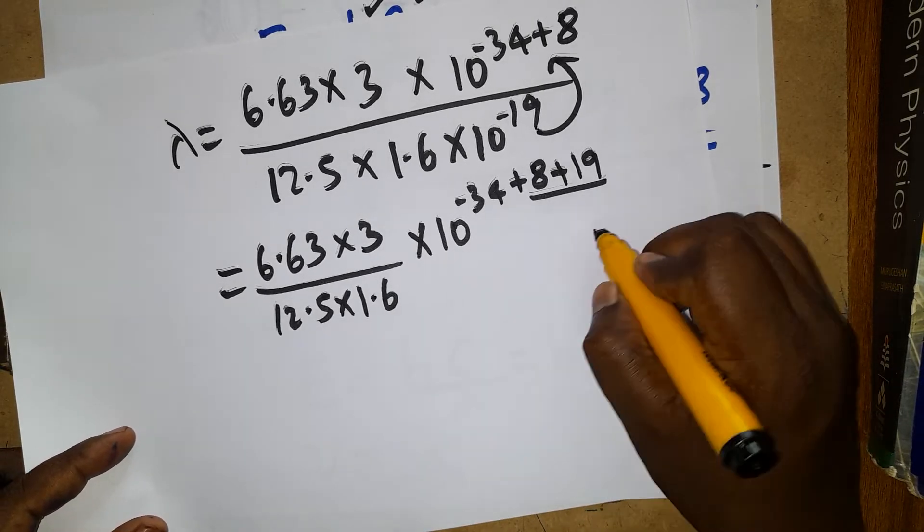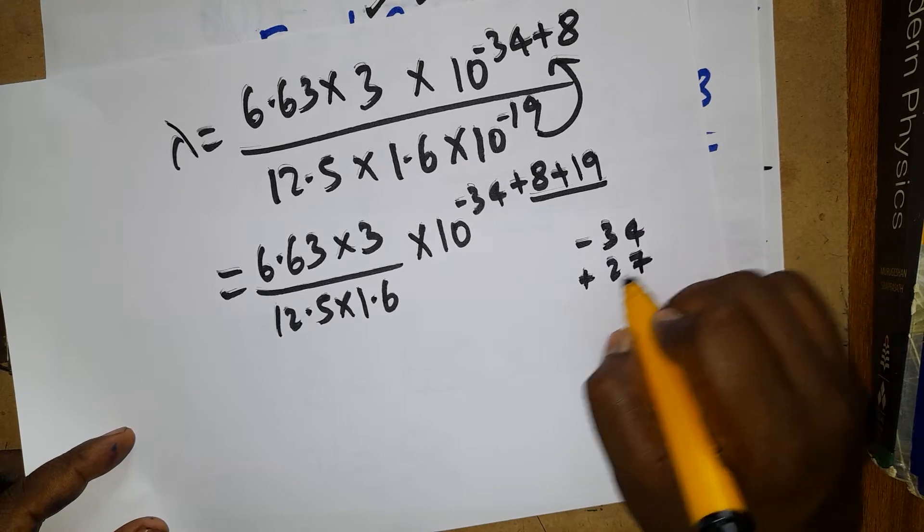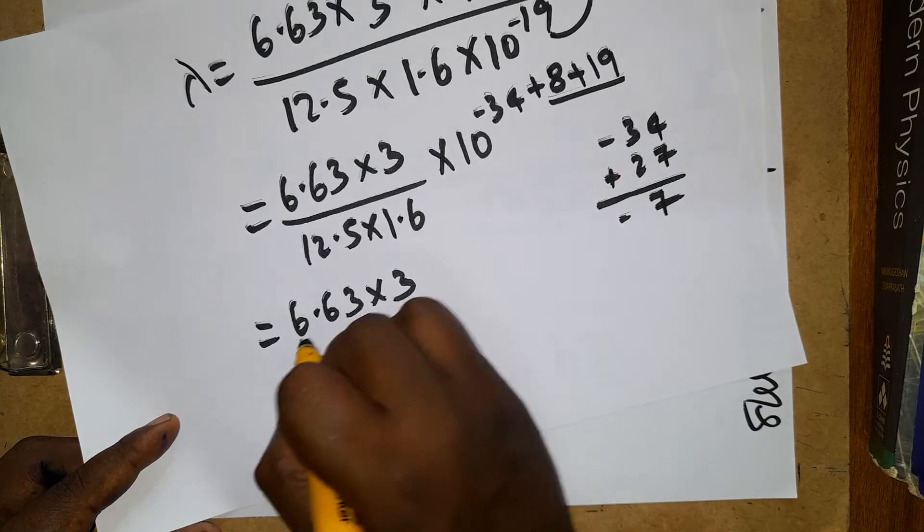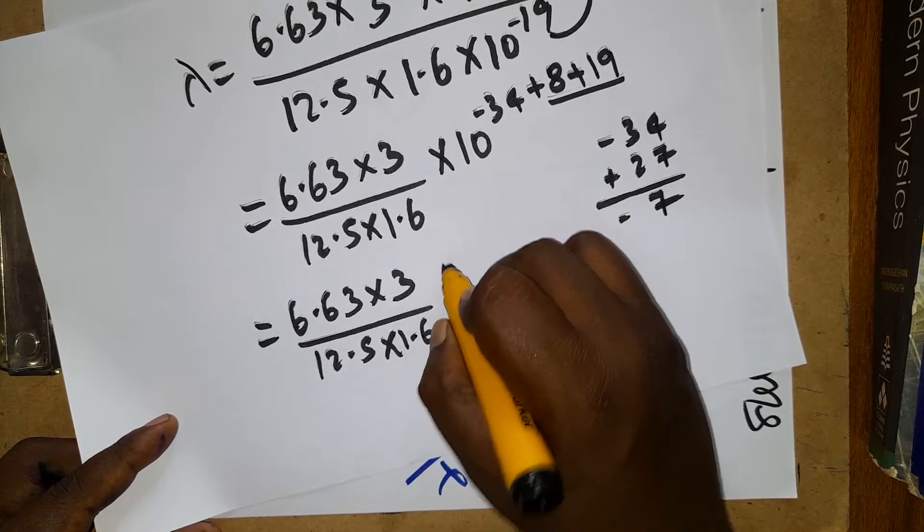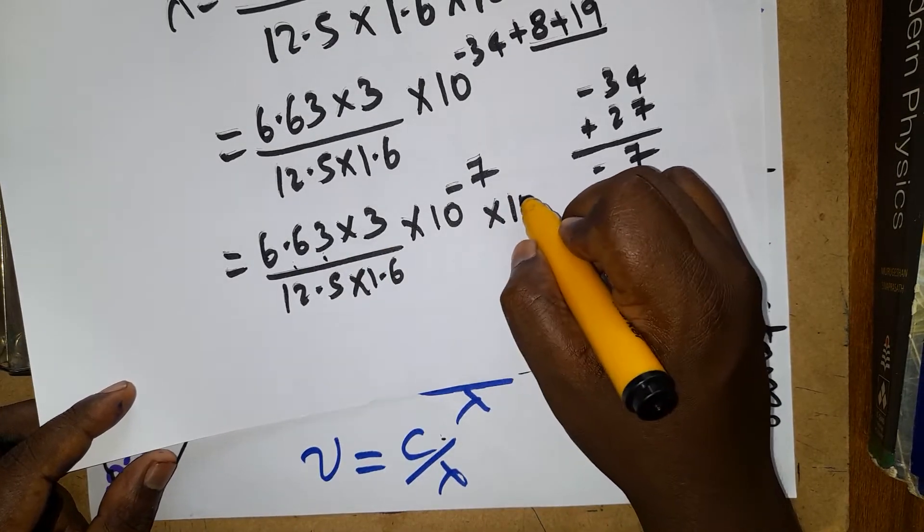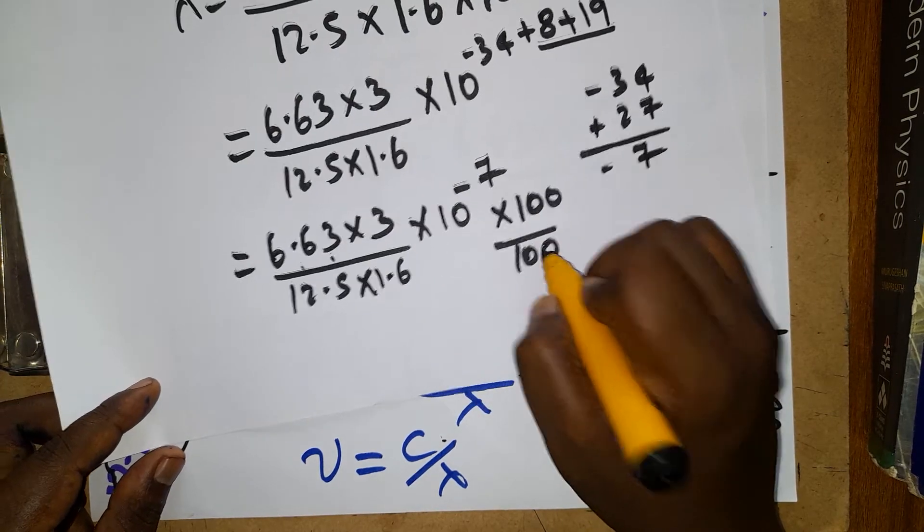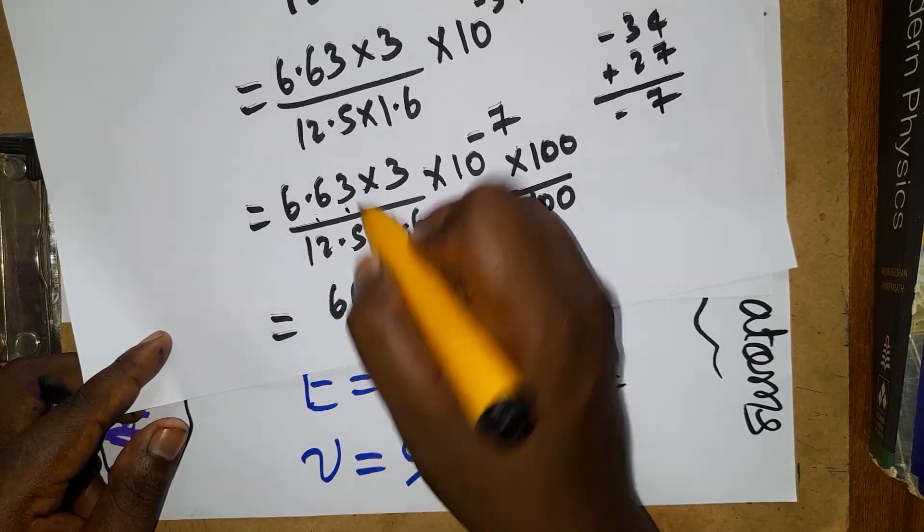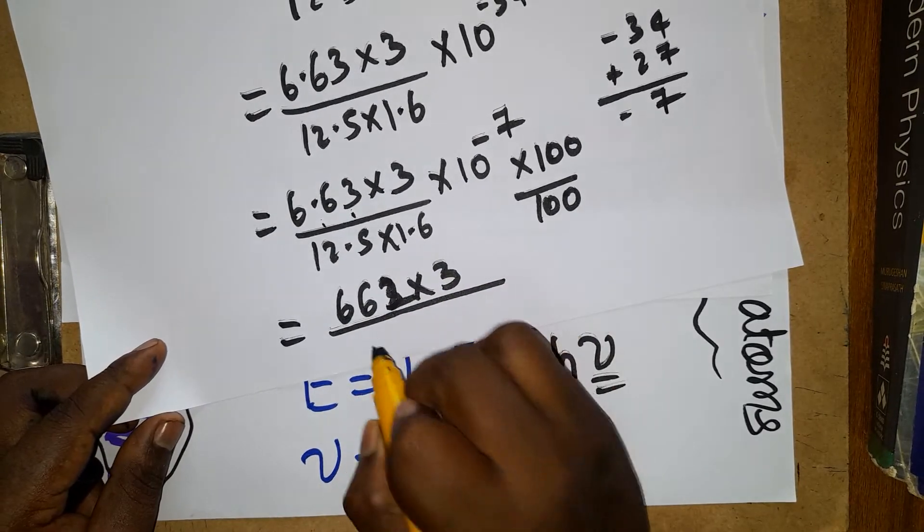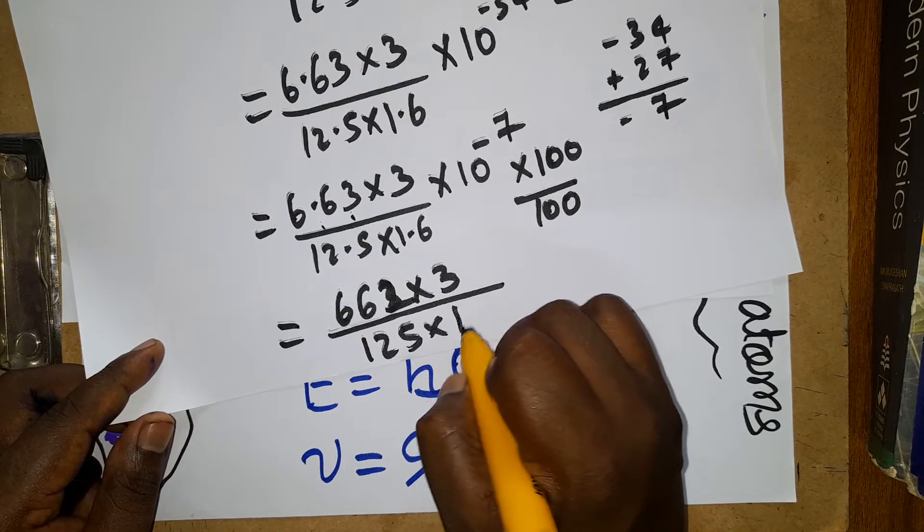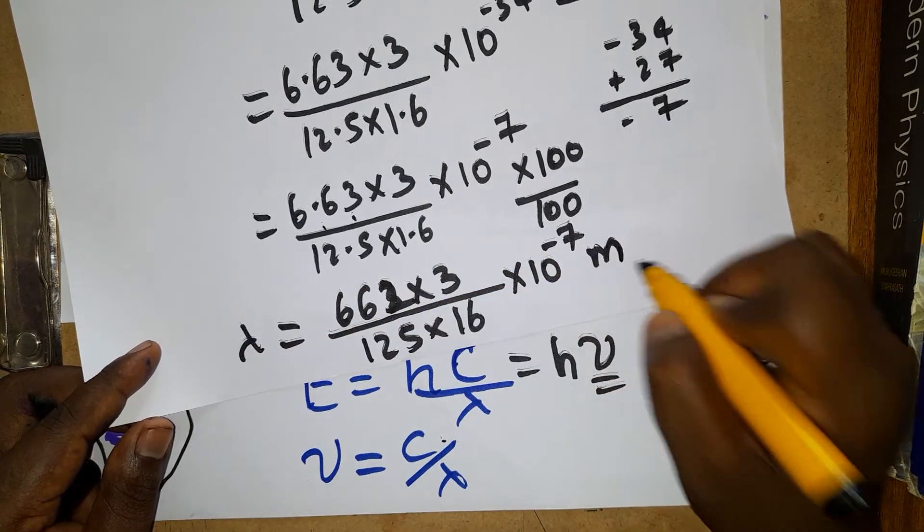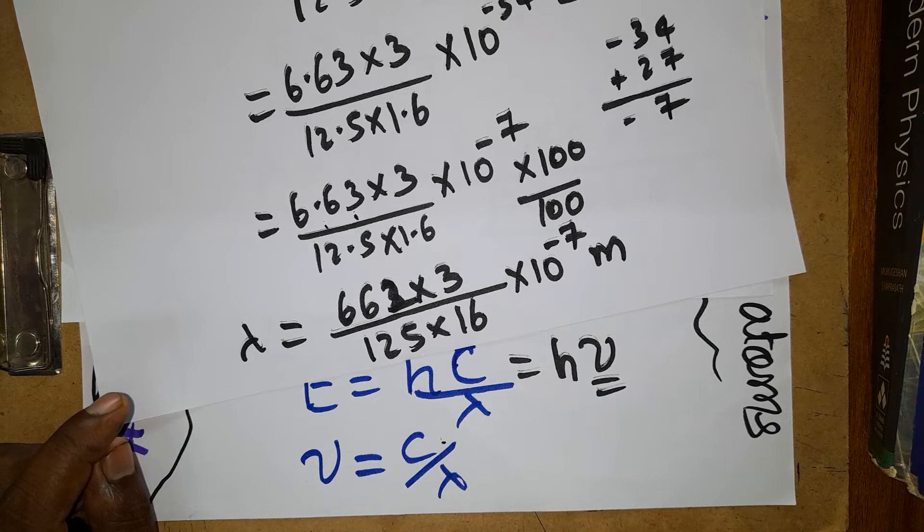So minus 34 plus 8 plus 19, this together we can get as 27. Minus 34 plus 27, the answer will be minus 7. So 6.63 into 3 divided by 12.5 into 1.6, into 10 power minus 7. The unit is going to be meter.